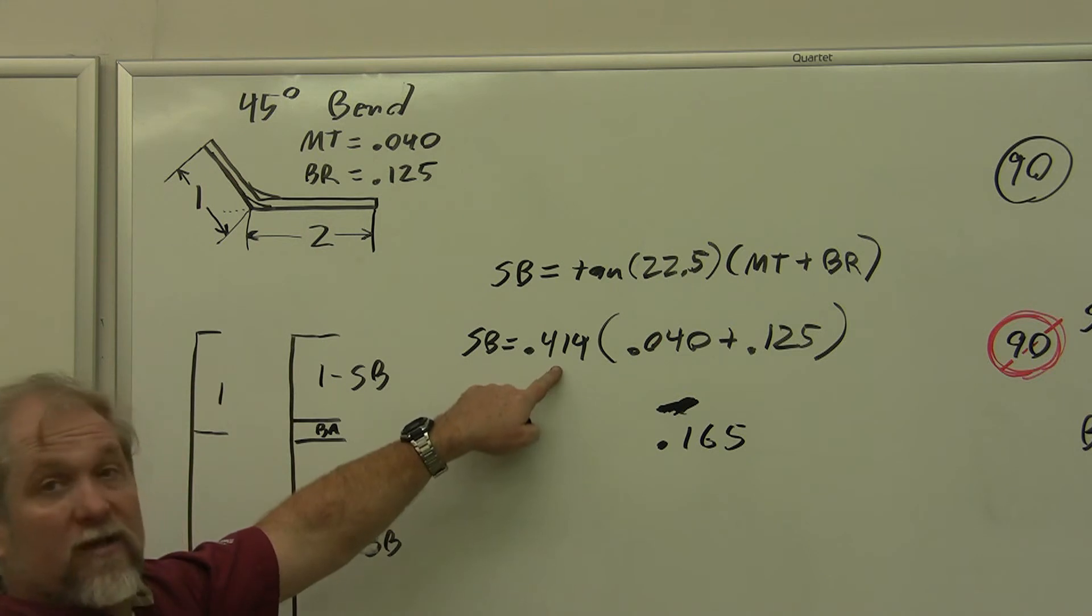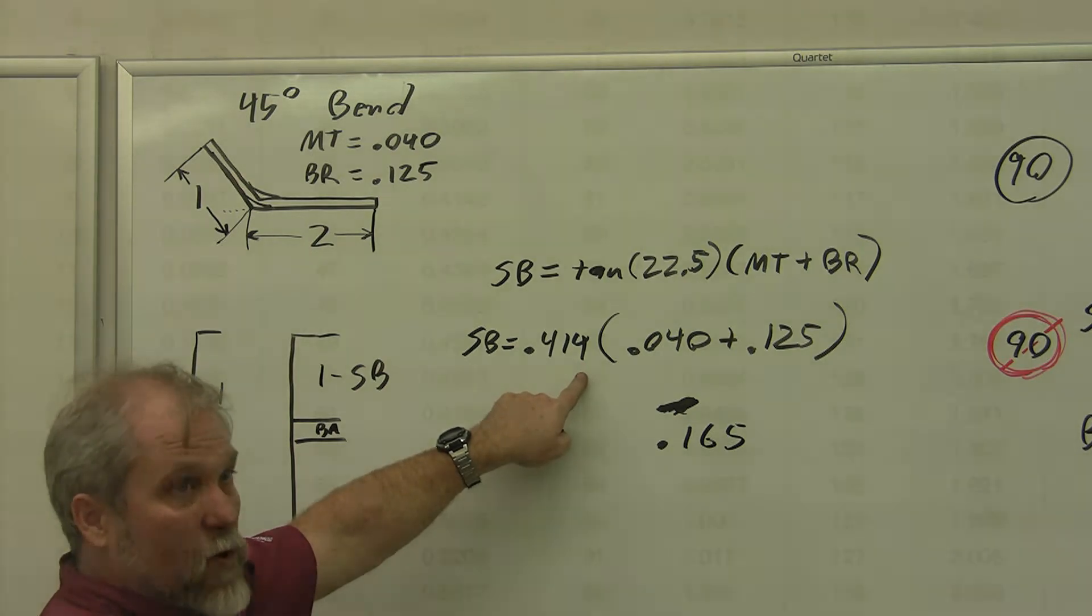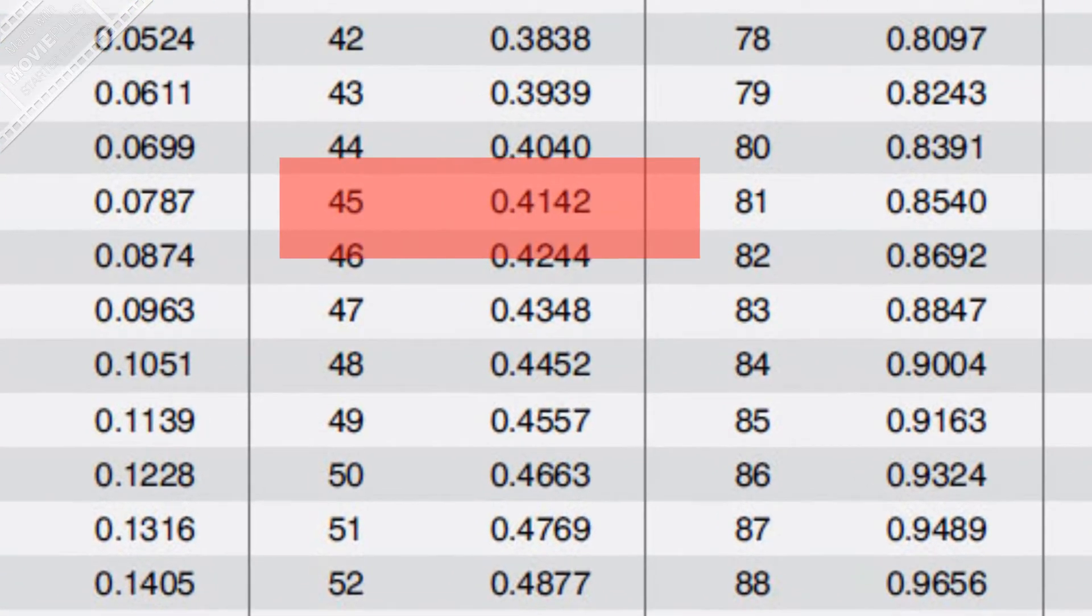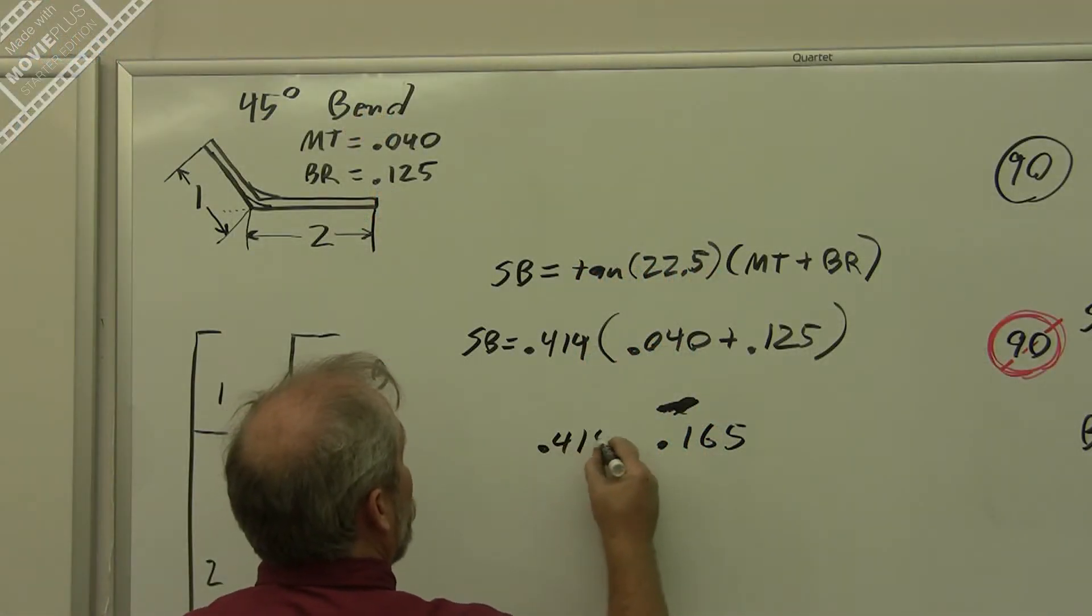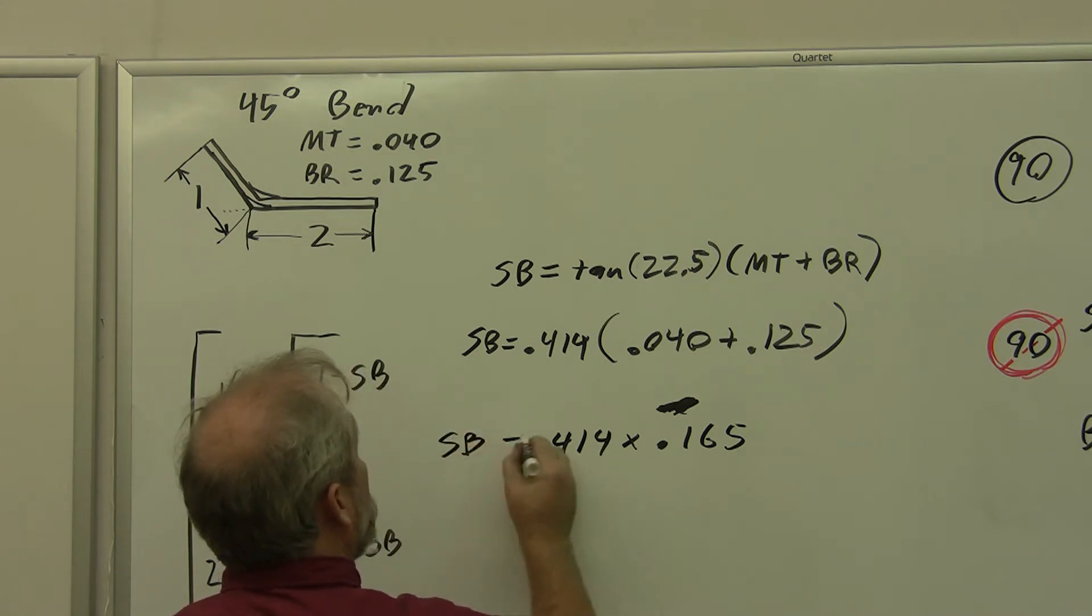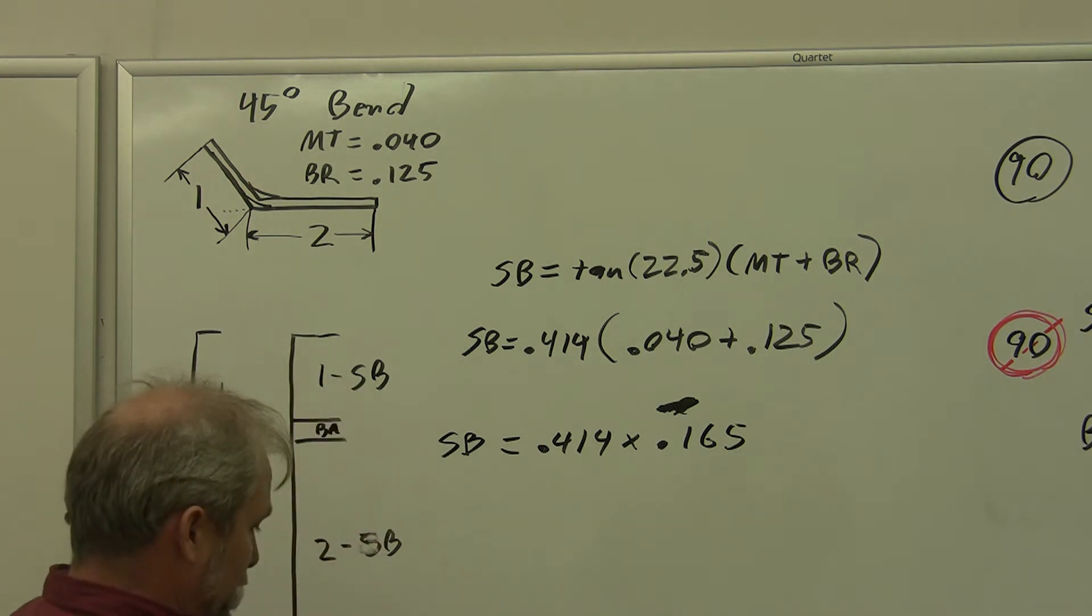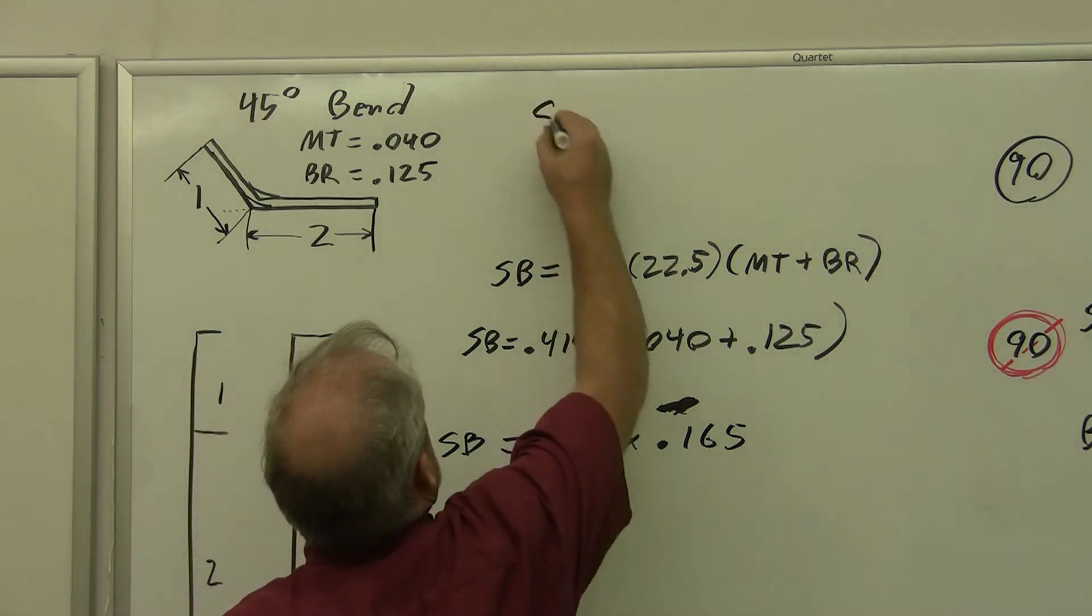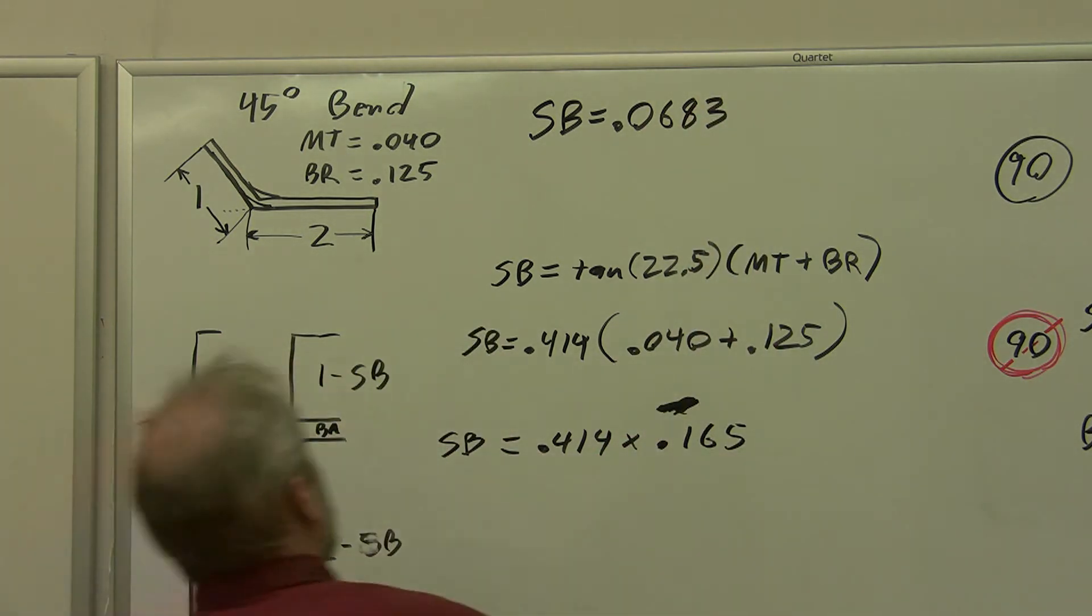Let's go ahead and compare this if we looked up the K chart. My K I calculated was 0.414. So if we pull our table and move across to the 45 degrees and look it up, the K is the same if we looked it up or if we calculated it. So we can use our 0.414 times 0.165 to get our setback answer. 0.414 times 0.165 gives us a setback of 0.0683. Close enough for the likes of me.